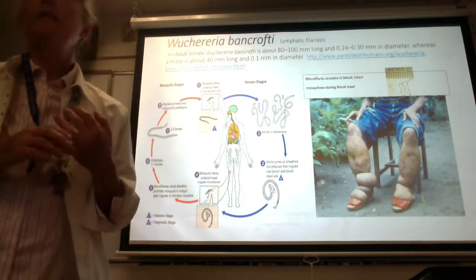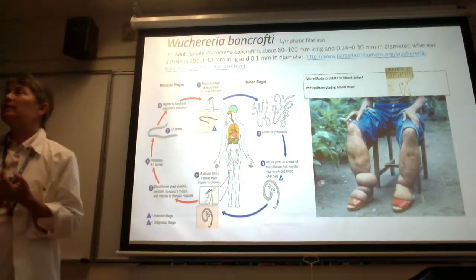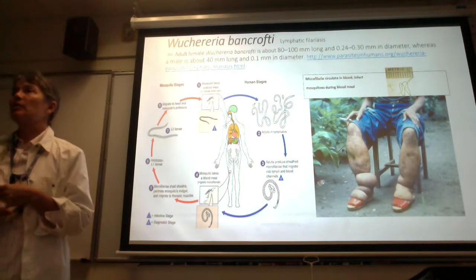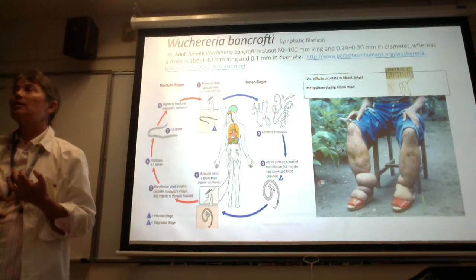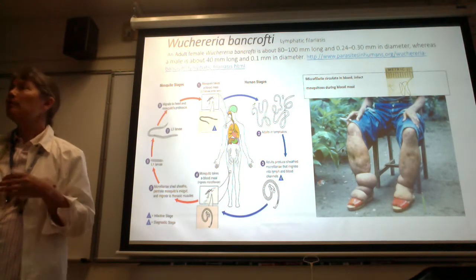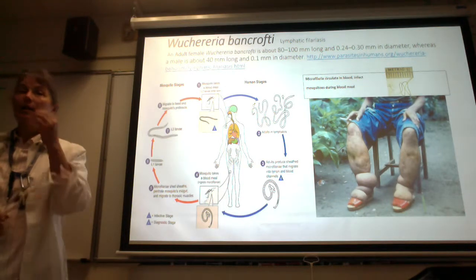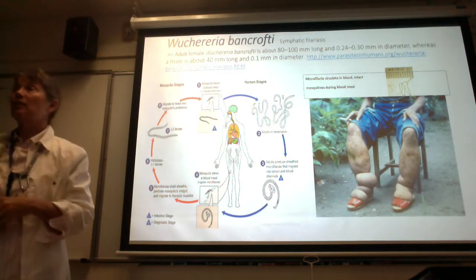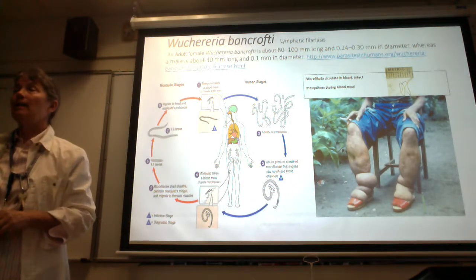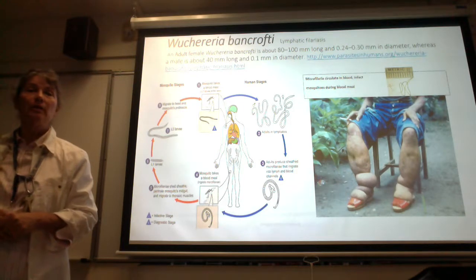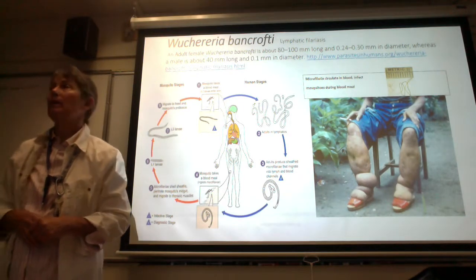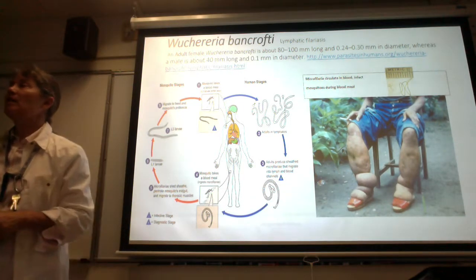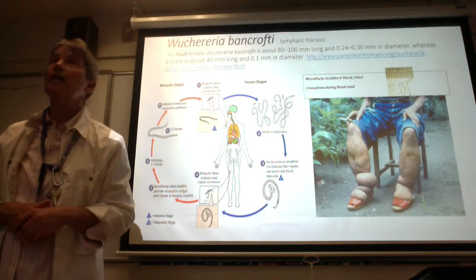The next nematode, folks, has a very different type of transmission. Remember the first two we talked about - Taenia solium and Ascaris lumbricoides - they both can be transmitted fecal-orally. Now we're looking at a nematode that has a totally different method of being transmitted. This is Wuchereria bancrofti.